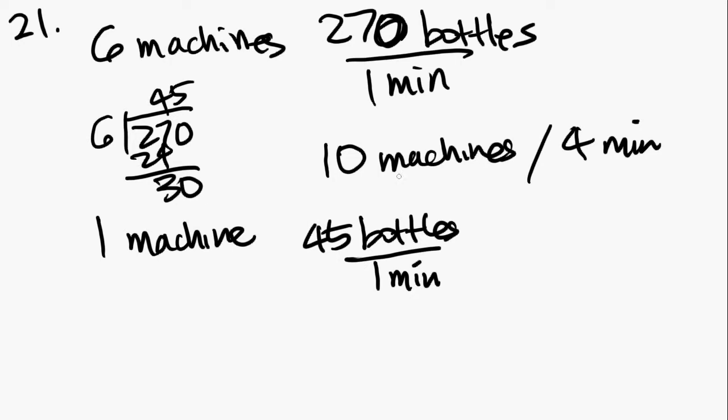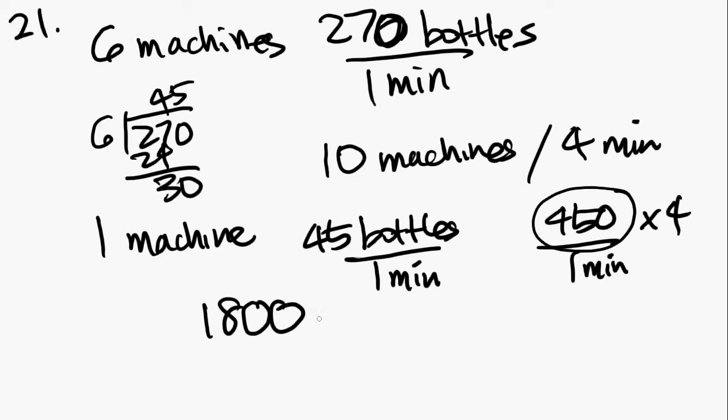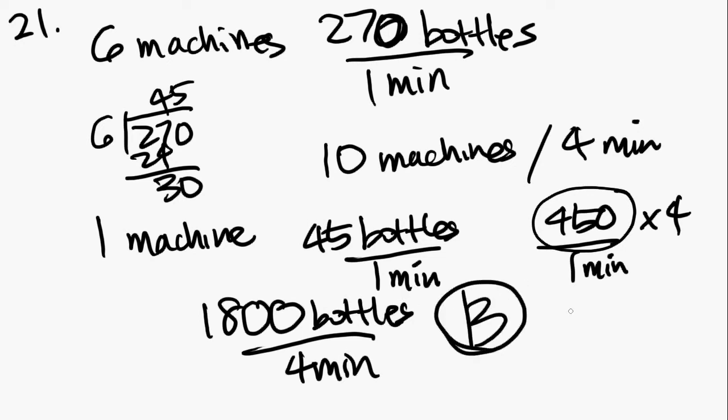So how many can 10 machines produce? Well, if one machine can produce 45, 10 machines can produce 450 in one minute. And they're saying, what about in four minutes? Well, that's simple, we just multiply this number by four and we will get 1800 bottles in four minutes. And let's see if that's one of the answer choices. Yes, that is answer choice B.